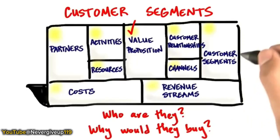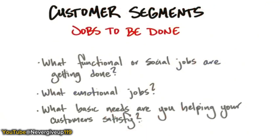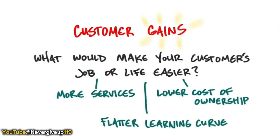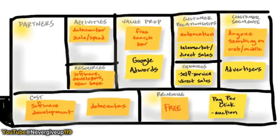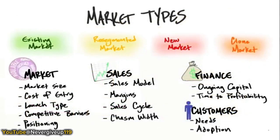We covered a lot of material in the customer segment part of the business model canvas: jobs to be done, pains, gains, multi-sided markets, and we closed with market type. Let me give you a couple of examples of startups who went and tried to define their customer segments.